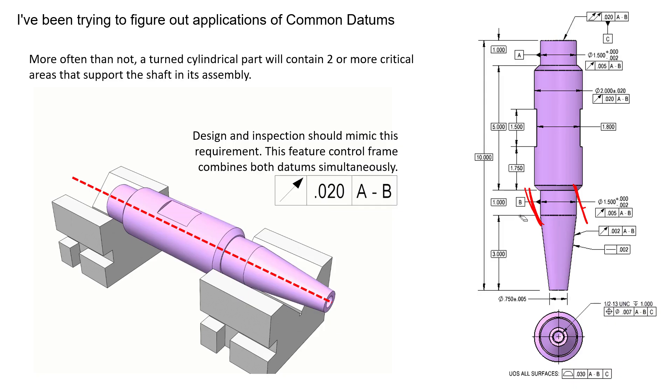Now we can see that we have an envelope simulating that datum axis, and this would be our datum axis derived from both features simultaneously. So we can get datum axis A-B from datum feature A and datum feature B. We can actually see the datum feature symbols right here on each of those features. Nothing on this drawing is referencing datum axis A, and nothing on this drawing is referencing datum axis B. Everything is referencing datum axis A-B.